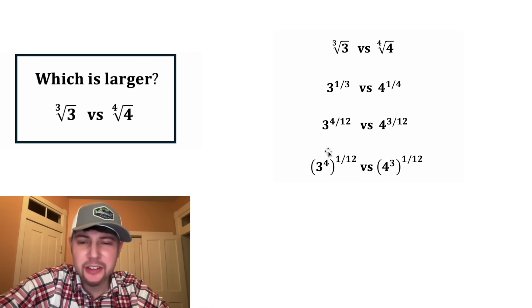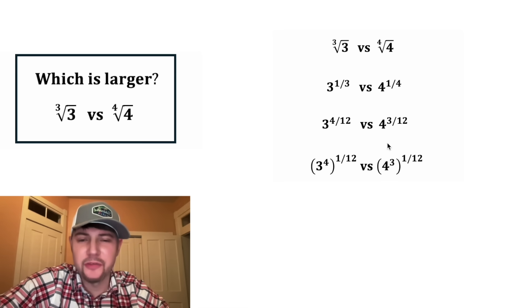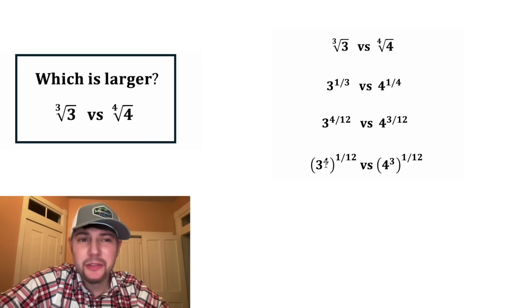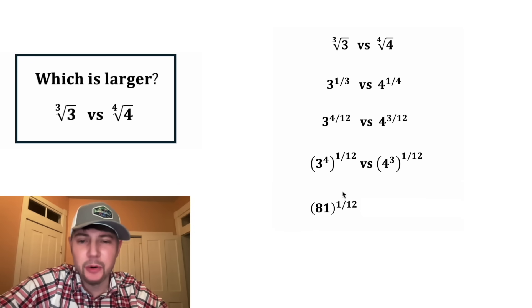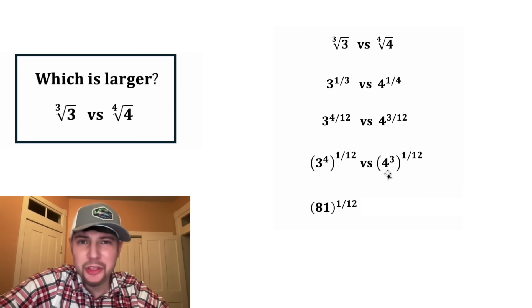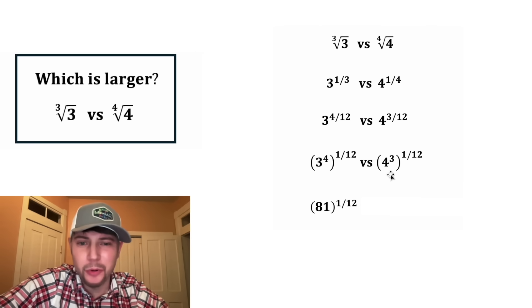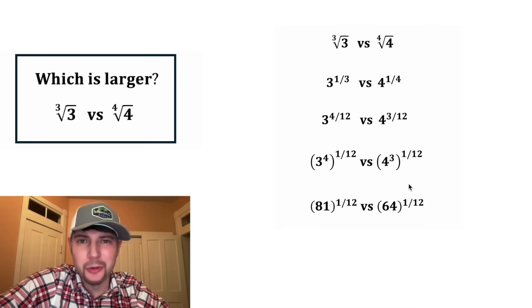So now we have three to the fourth to the 1 twelfth versus four to the third to the 1 twelfth. Now from here, 3 to the fourth, that is three times three times three times three. So this can be written as 81 to the 1 twelfth. And then four to the third power is four times four times four. So this changes into 64 to the 1 twelfth.